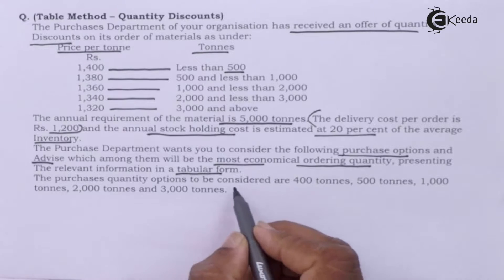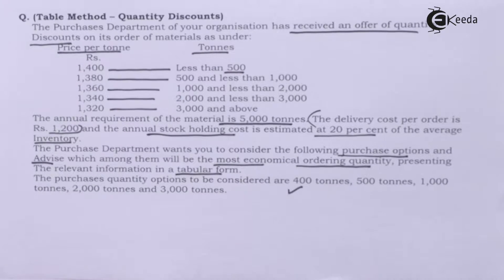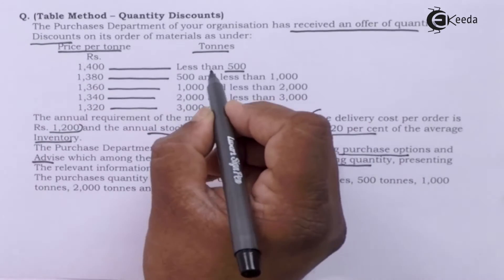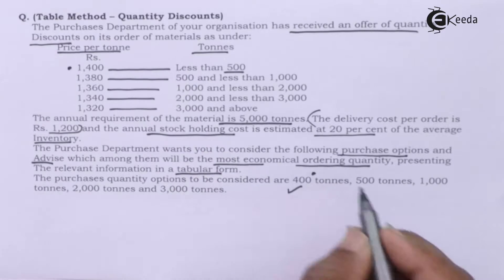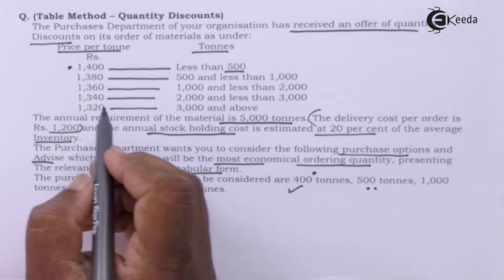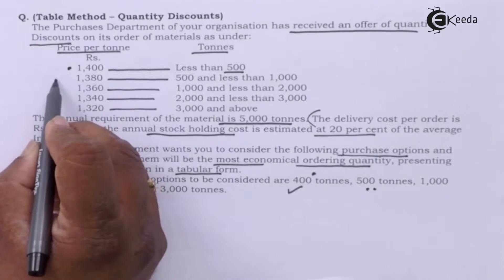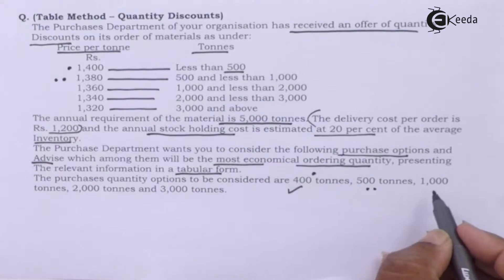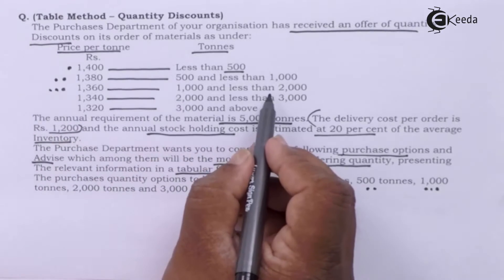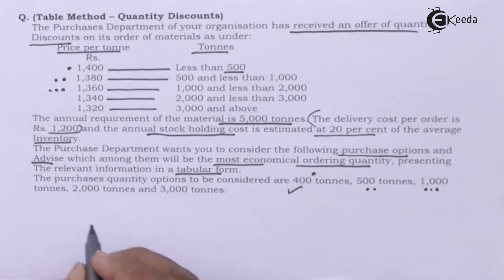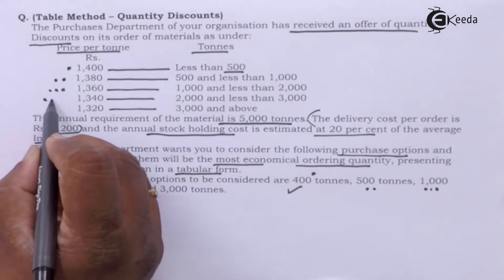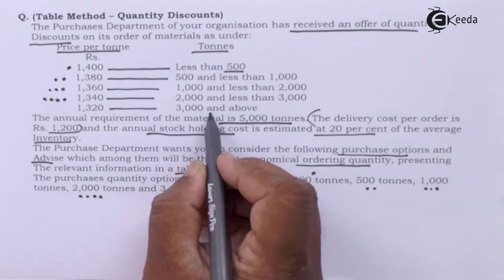The purchase quantity options to be considered are: 400 tons, which falls in the first price bracket at 1400 per ton; 500 tons, where the applicable rate will be 1380; 1000 tons, falling in the 1000 but less than 2000 category at 1360; 2000 tons at 1340; and 3000 tons at 1320 per ton.